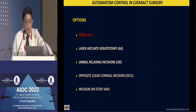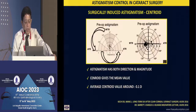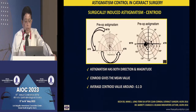What are the options available to us? Obviously the mainstay is toric and trifocal lenses. You also have laser arcuate keratotomy, limbal relaxing incisions, and opposite clear corneal incisions. I'll briefly go through these.